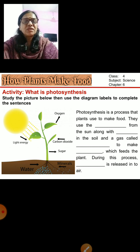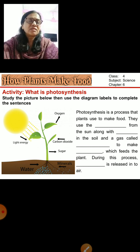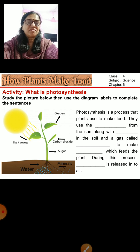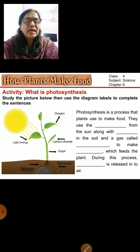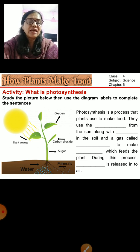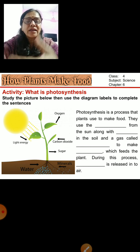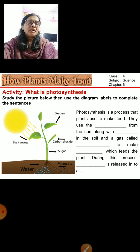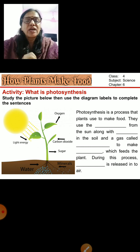Photosynthesis is a process that plants use to make food. They use light energy from the sun, along with water in the soil, and a gas called carbon dioxide, to make sugar or starch which feeds the plant. During this process, oxygen is released into the air.